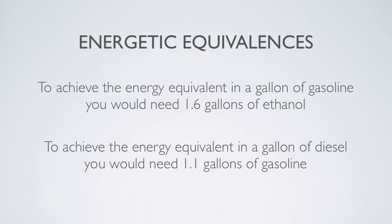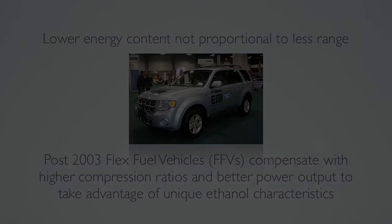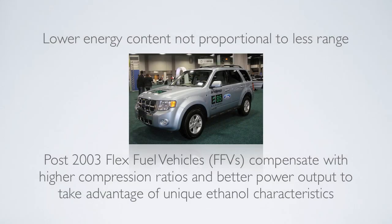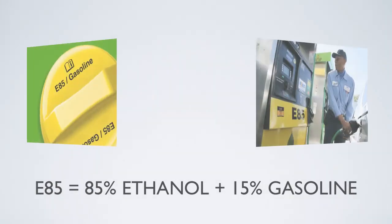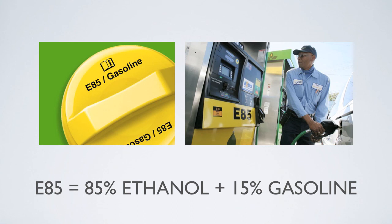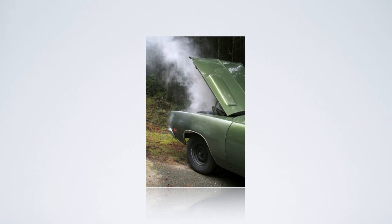Even though a gallon of ethanol contains 63% of the energy in one gallon of gasoline, it is not necessarily true that you would get 63% of the range with a gasoline engine by filling your tank with pure ethanol. This is because gasoline engines are tuned specifically to combust gasoline, and a fuel with different properties would not combust optimally. It is, however, borne out empirically that a flex fuel vehicle that fills up with E85 — a fuel that contains 85% ethanol and 15% gasoline — will get lower gas mileage than the same vehicle filled with conventional gasoline. Please note that we do not encourage you to fill your gasoline vehicle with diesel fuel to get better gas mileage.